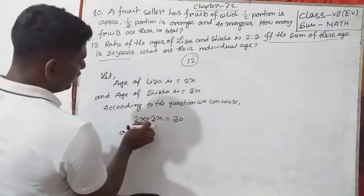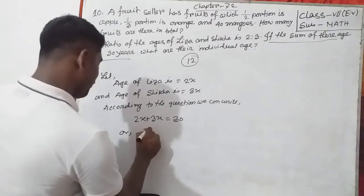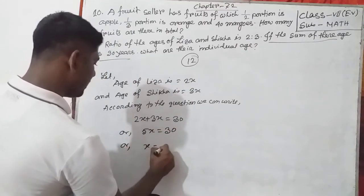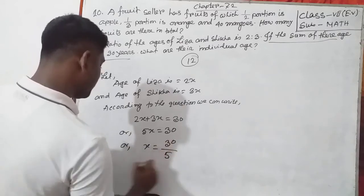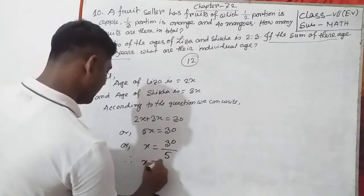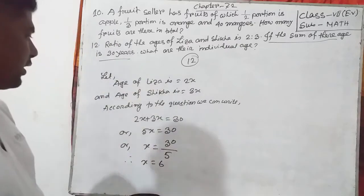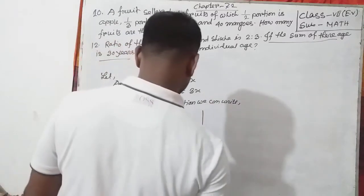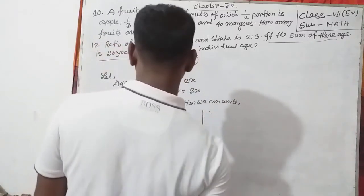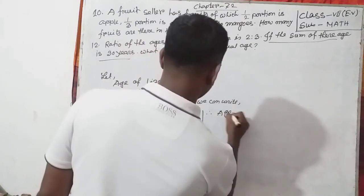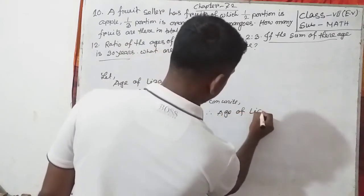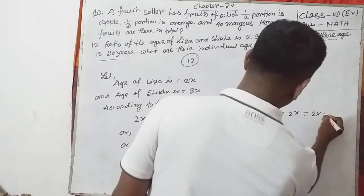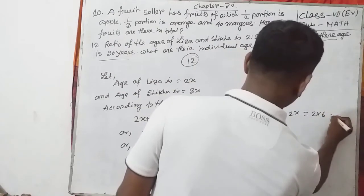Now calculating: 2x plus 3x equals 5x equals 30, or x equals 30 by 5, so x equals 6. Now putting the value of x equals 6, we can write: age of Lisa is 2x, that means 2 into 6, which equals 12.